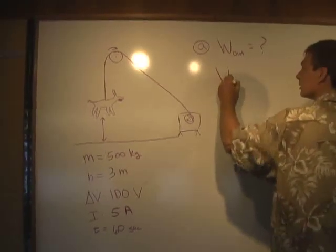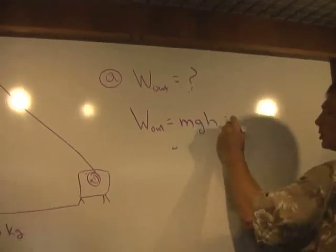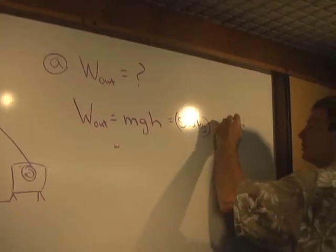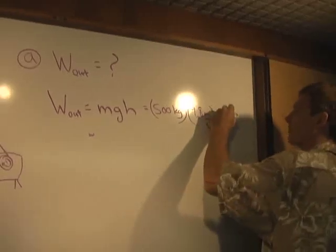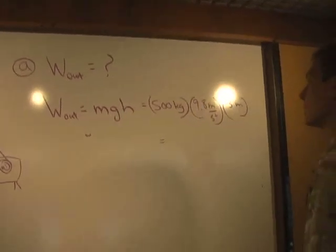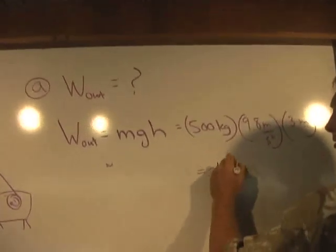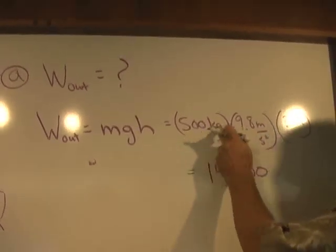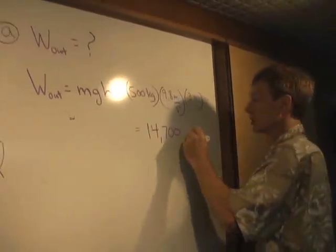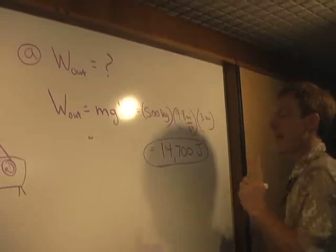And the output work is mass times gravity times height, which is 500 kilograms times 9.8 meters per second squared, which is going to be, I'm going to say it's 14,700 kilogram meters per second squared. That's a newton times a meter, so I've got a newton times a meter, which is a joule. So 14,700 joules. That's the output work.